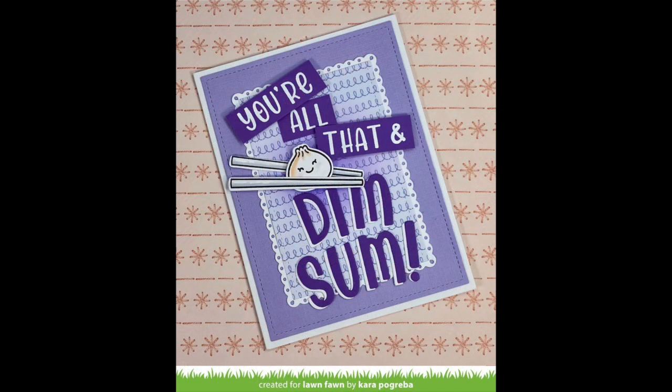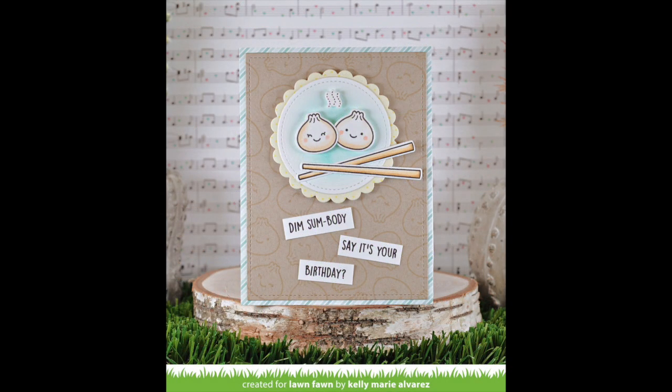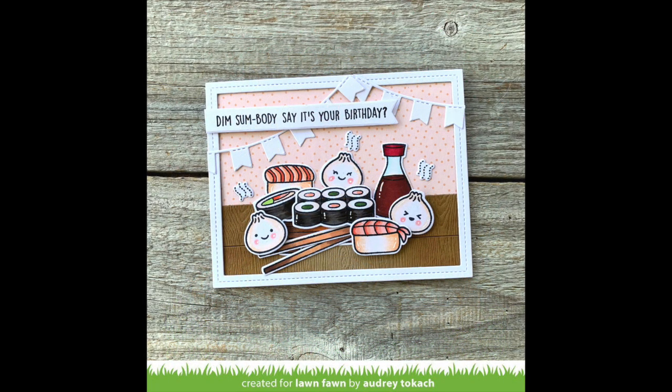Kara used Henry's Junior's ABCs and Henry's ABCs to create a really fun big bold sentiment for her card. And here is a card by Kelly and I love how she used the steam bun to stamp a tone-on-tone patterned paper for the background of her card. Audrey also paired these cute little steam buns with Let's Roll and I just think they look perfect with all that sushi.